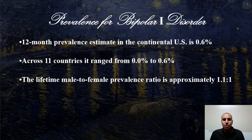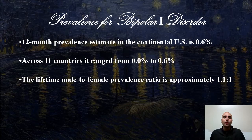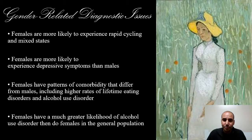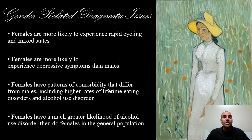In the background is van Gogh's 'Starry Night over the Rhône,' a lesser-known painting but one of my favorites. The lifetime male-to-female prevalence ratio is 1.1 to 1 — males have it slightly more than females. Bipolar 1 is slightly more common in males; I believe females have a higher prevalence of Bipolar 2.